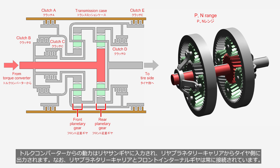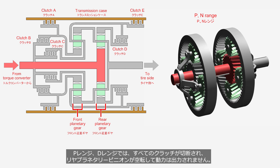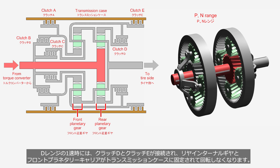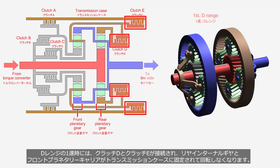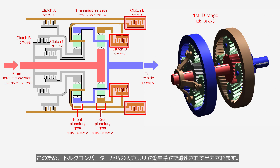The power from the torque converter is input into the rear sun gear and output to the tire side from the rear planetary carrier. The rear planetary carrier and the front internal gear are always connected. In the P and N ranges, all clutches are disengaged and the rear planetary pinions rotate idly, resulting in no power output. In the first gear of the D range, clutch D and clutch E are engaged, and the rear internal gear and the front planetary carrier are locked to the transmission case, preventing them from rotating. As a result, the input from the torque converter is reduced in speed by the rear planetary gear and then output.